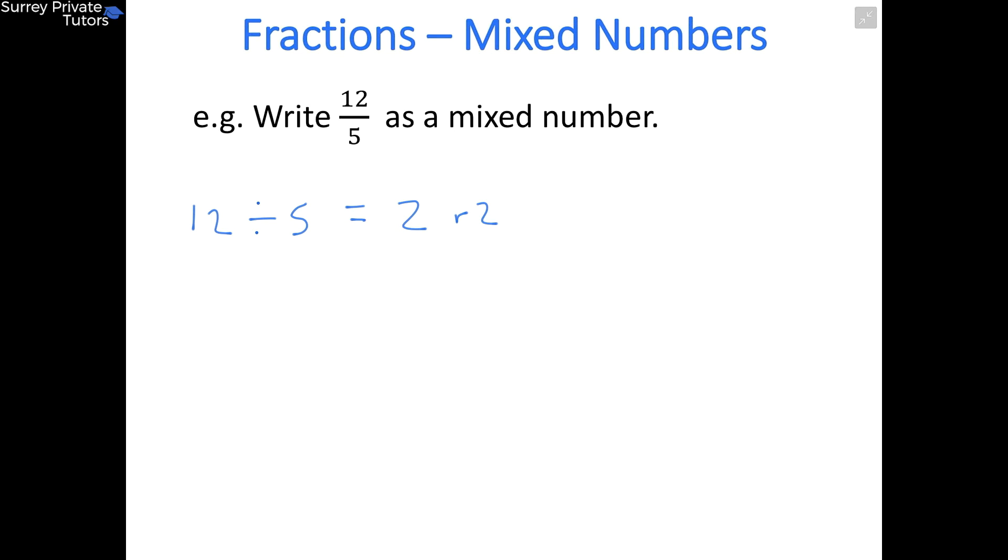To write this as a mixed number, take the whole number—that becomes the integer part. Then take your remainder and write it as a fraction where the remainder is the numerator and the denominator is the same as in the original question. For us, that's 5 because we had 12/5.